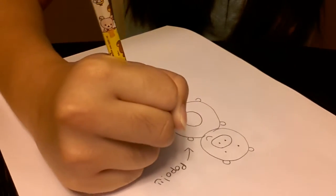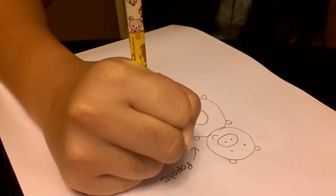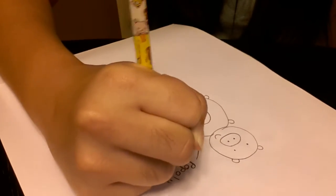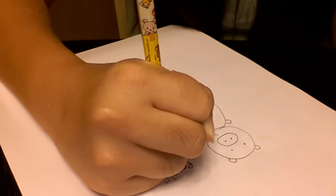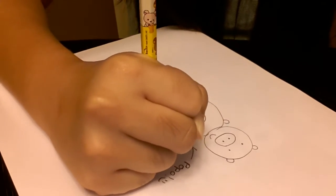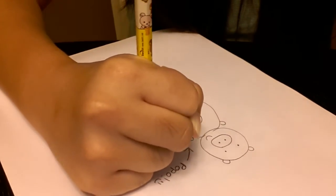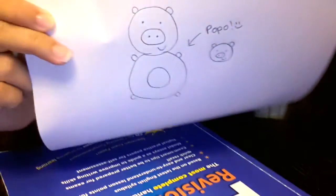So I'm gonna draw the other one here. So first, you draw the circle head. Two ears, eyes, nose, smiley face. Like that.